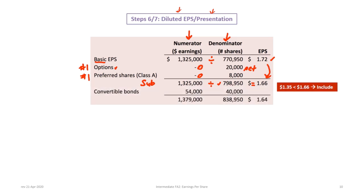The individual impacts calculated earlier provide all the numbers needed for the diluted EPS calculation. Adding the second-ranked item — convertible bonds — we include the $54,000 earnings impact and 40,000 additional shares. Creating a new subtotal: $1,325,000 plus $54,000 equals $1,379,000, divided by 838,950 shares, gives $1.64. The EPS has dropped again, confirming continued dilution. Any time EPS increases, that item is anti-dilutive or the calculation is wrong.